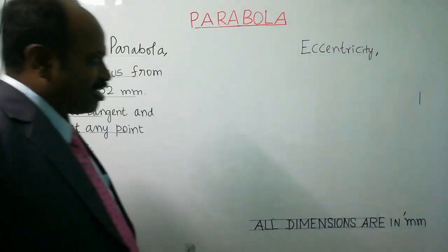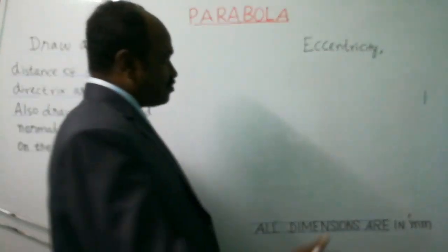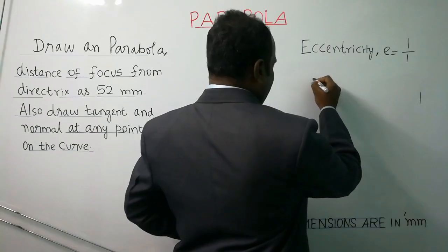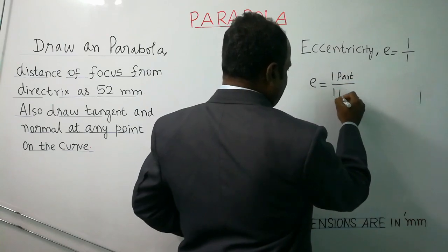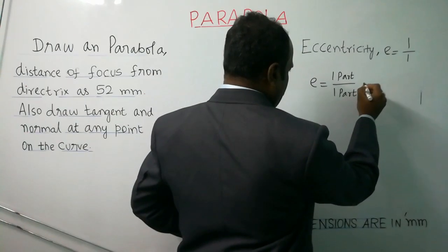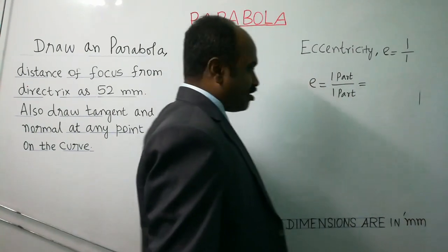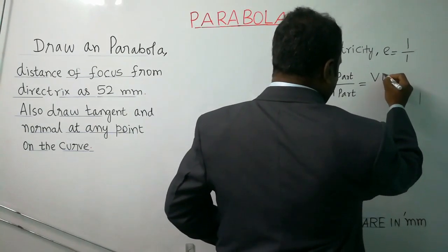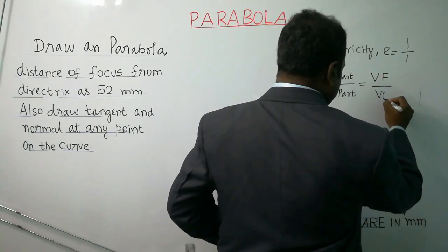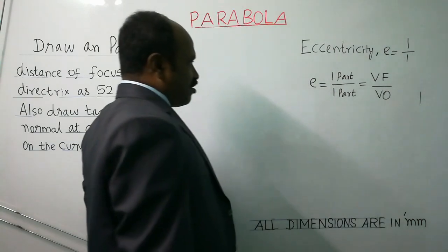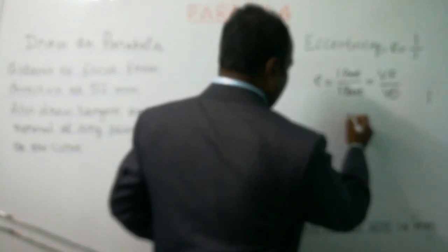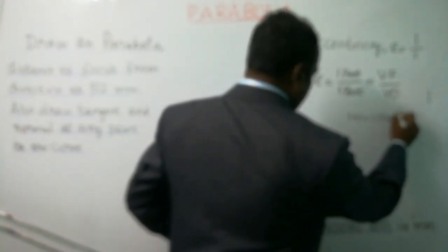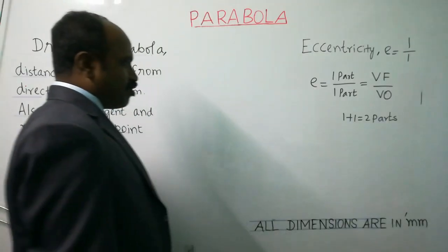For a parabola, the eccentricity value is 1, that is eccentricity equals 1 over 1. So the ratio given is VF by VO — VF will be 1 part and VO will be 1 part. Adding numerator and denominator, 1 plus 1 equals 2 parts. So the total number of parts will be 2 parts.